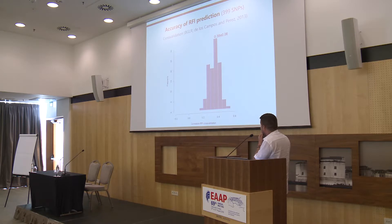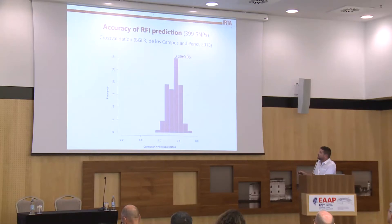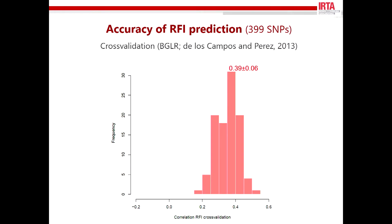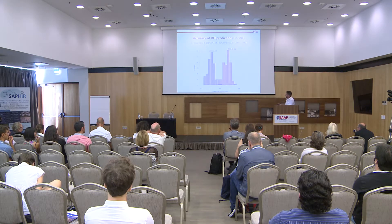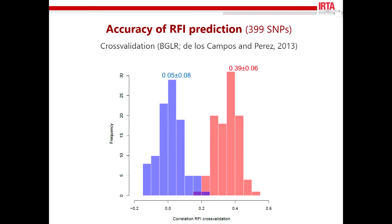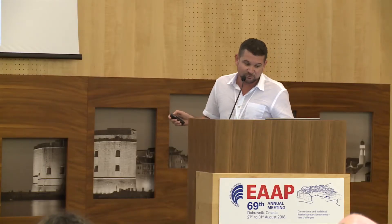We also asked ourselves whether we can use those markers to predict residual feed intake. We performed a cross-validation repeated 100 times. The accuracy of residual feed intake prediction — interpreted as the correlation between the real value and the predicted value — was moderate, but certainly far above what we would expect by chance. We repeated the same analysis 100 times selecting each time different validation and testing datasets, and also the same number of randomly selected markers.